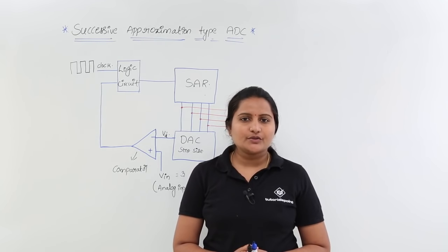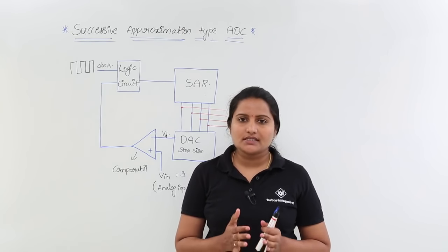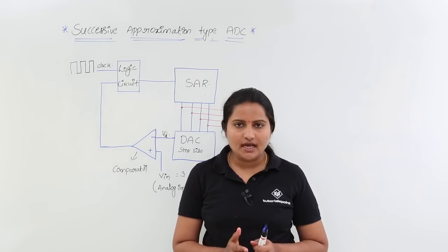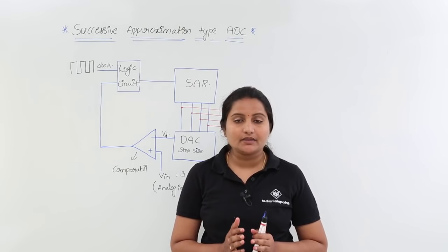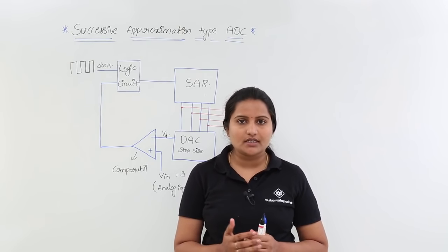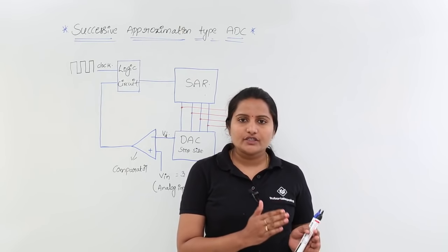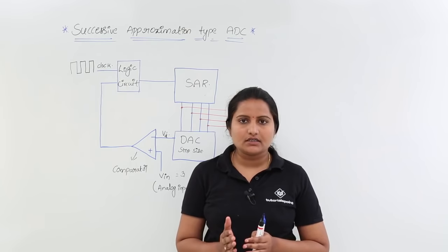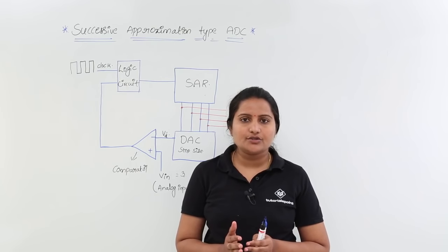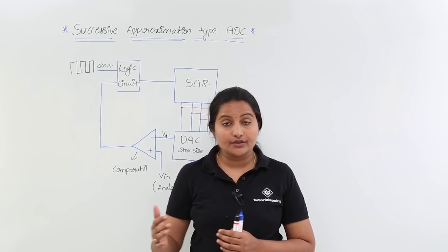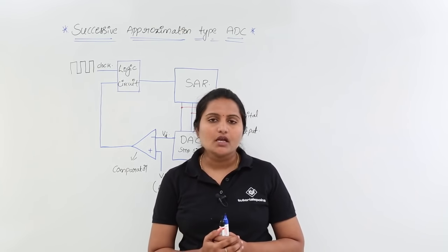In this class we are going to discuss about successive approximation type ADC — that means it is an analog to digital converter which converts a continuous type signal into a digital signal, that means into discrete form.